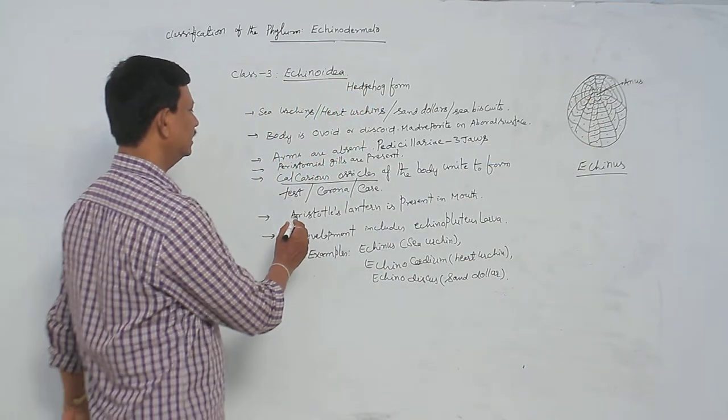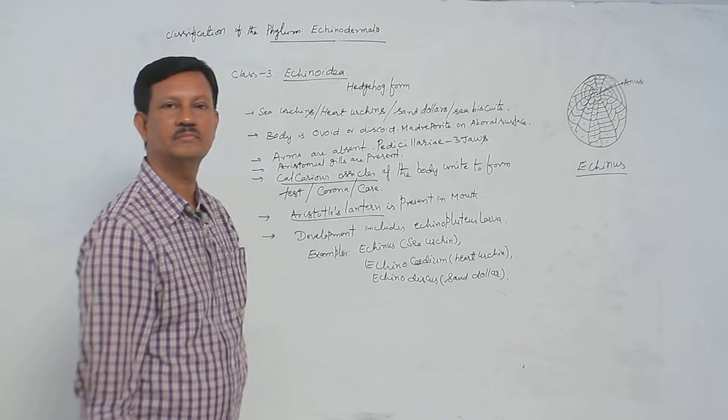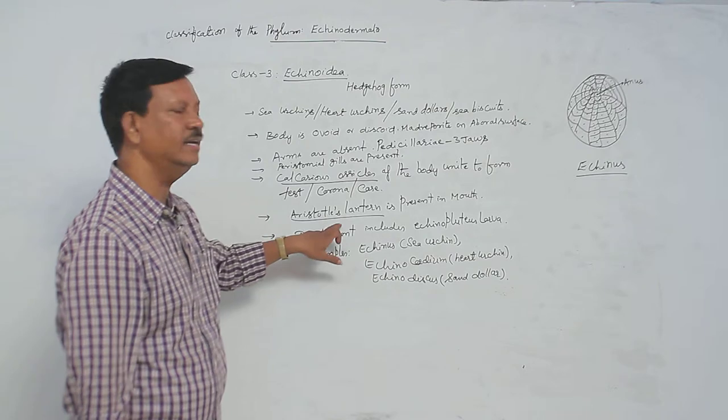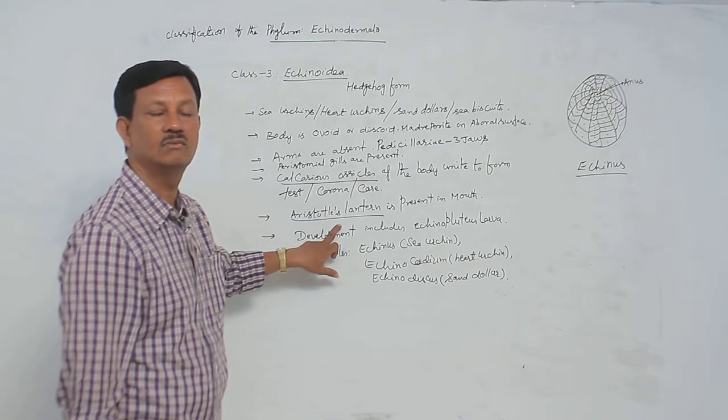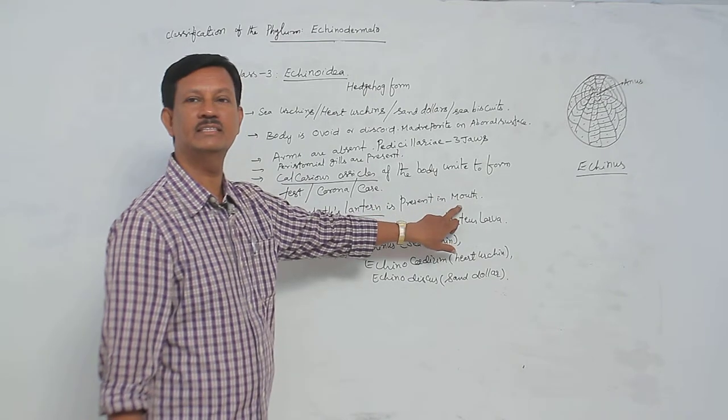The most important character of this class is that Aristotle's lantern is present in the body. It has five jaws present here, and they are situated in the mouth region.